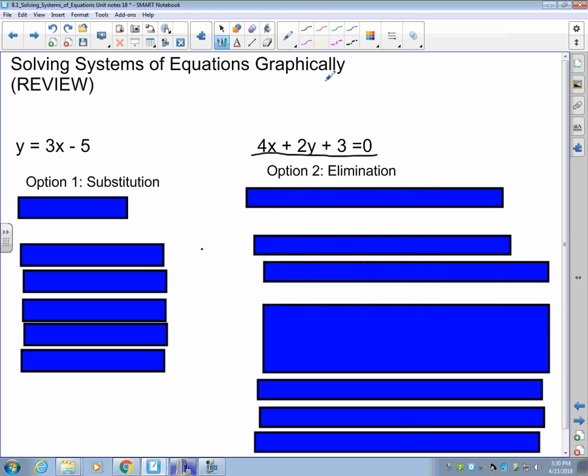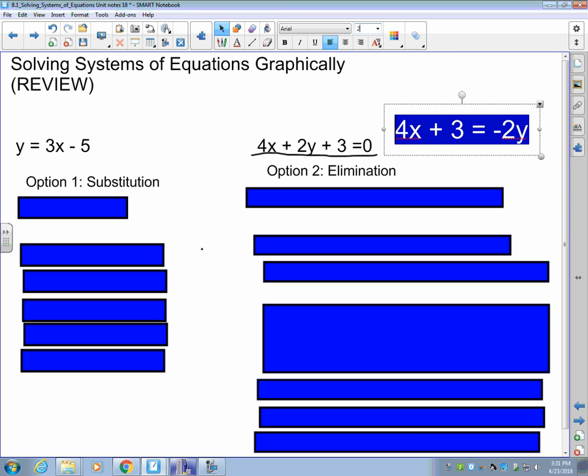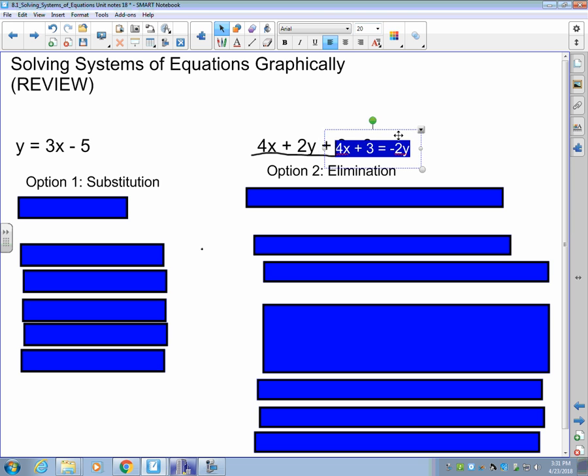Because our graphing calculator only has the ability to graph y equals equations. So we have to have that y equals. To rearrange this one, our first equation would be 4x + 3. I'm going to subtract 2y on both sides. After that, I can't have negative 2y, so I'm going to have to divide everything by negative 2. So 4x divided by negative 2 is negative 2x. 3 divided by negative 2 is 3 halves. And then that is just y. So there's my second equation right there.